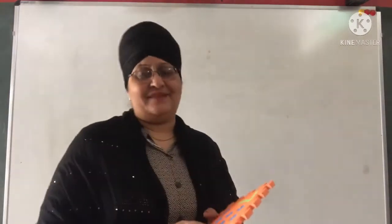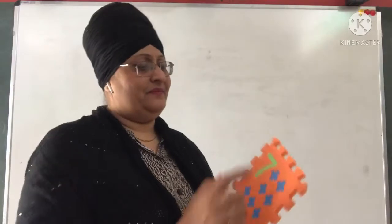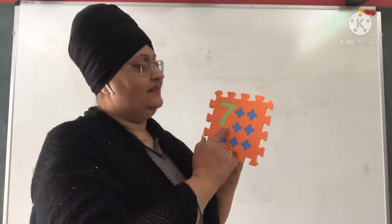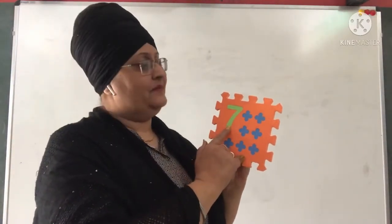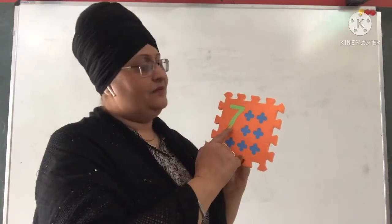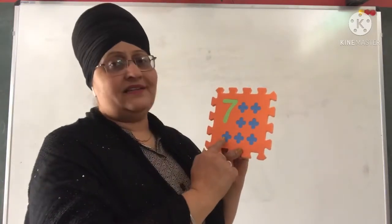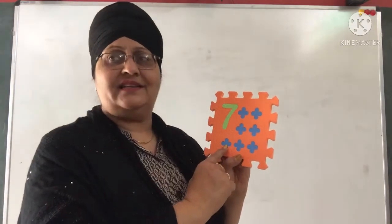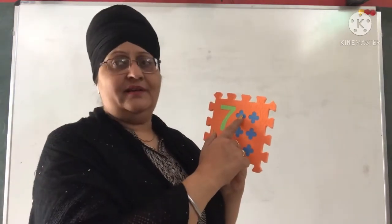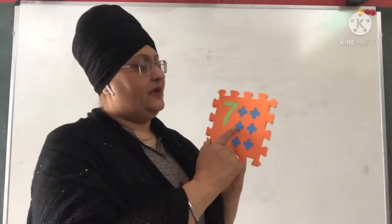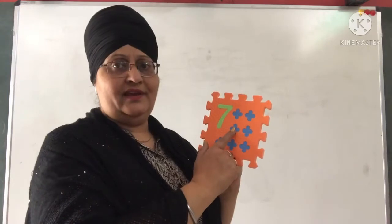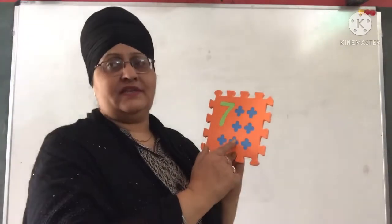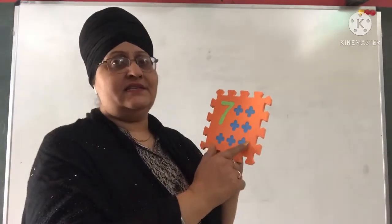Next number is 7. This is number 7. 7. Let's count. How many flowers are there? There are 7 flowers. Let's count: 1, 2, 3, 4, 5, 6, 7.